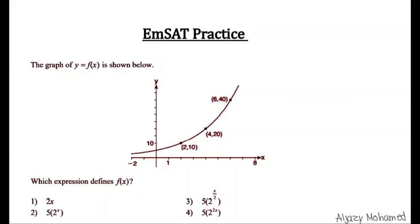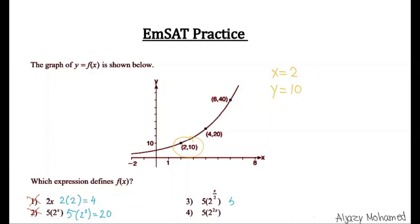The graph of y equals f(x) is shown. We choose the simplest points: x equals 2, y equals 10. We replace x with 2 for each option. Option 1: 2 times 2 equals 4 — incorrect. Option 2: 5 times 2 to the power of 2 equals 20 — incorrect. Option 3: 5 times 2 to the power of 2 over 2 equals 10 — correct.